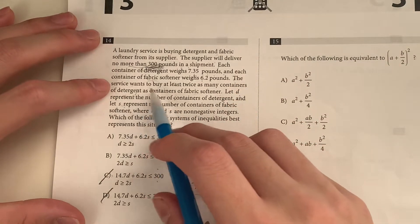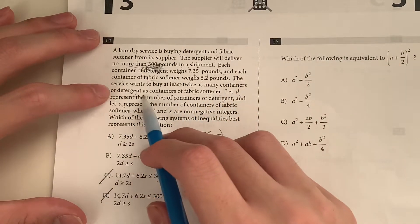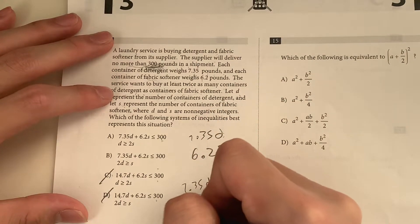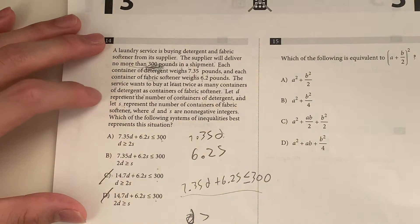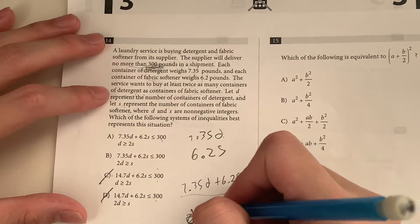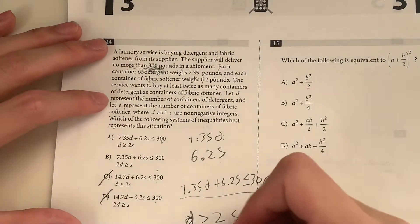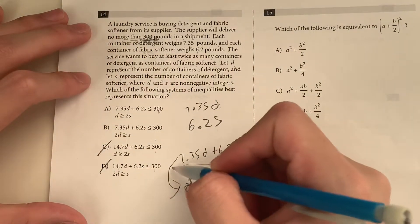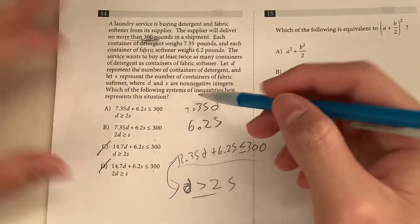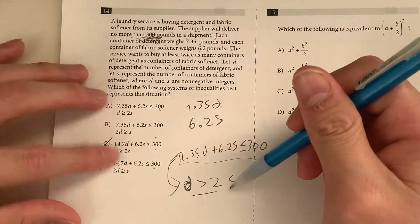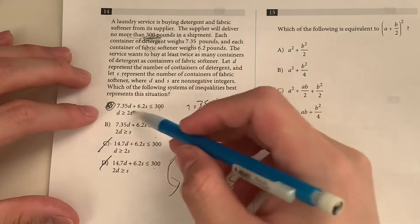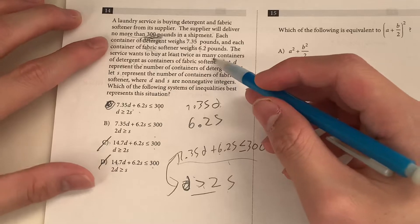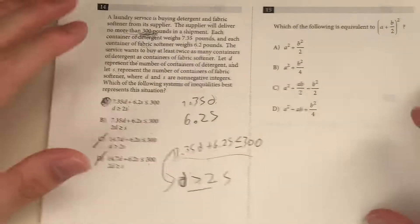Now, they want us to buy at least twice as many containers of detergent as containers of softener. So there has to be twice as much detergent. So D has to be greater than twice as many softeners. So it's going to be D is greater than or equal to 2S. So that means that these two are systems of equation just by using the information that they give us, meaning your answer has to be A. Both of these coincide with both of these. So basically, you just use the information that's given, and you just write out your equation. And that's how you do it.